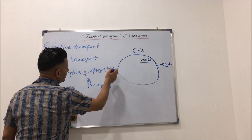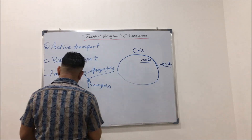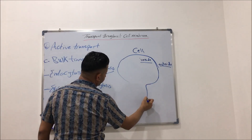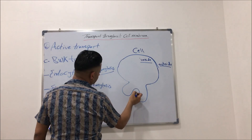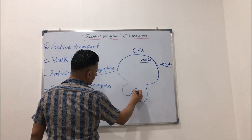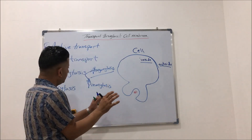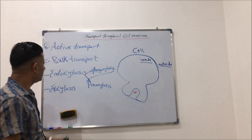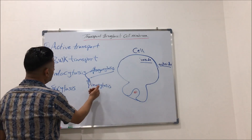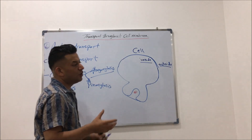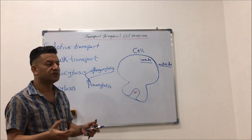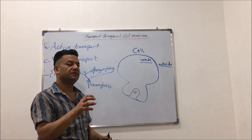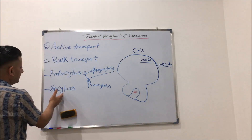Phagocytosis means the cell membrane forms folds around particles or substances and then engulfs them — it is called phagocytosis. Pinocytosis means when the cell takes in fluids or liquids; for example, in the intestine of humans, fatty droplets are taken inside the cell by pinocytosis.